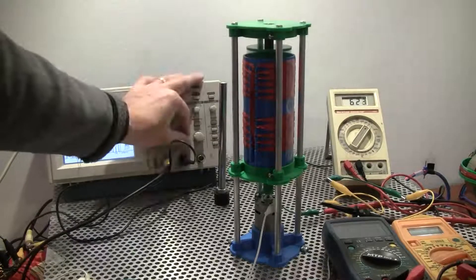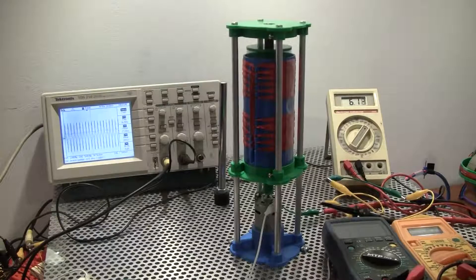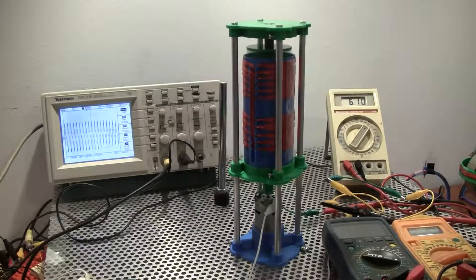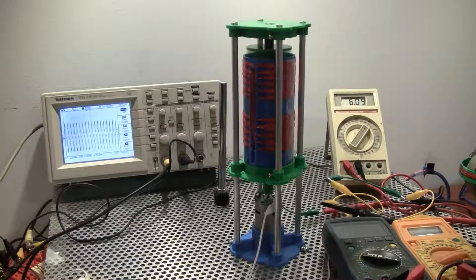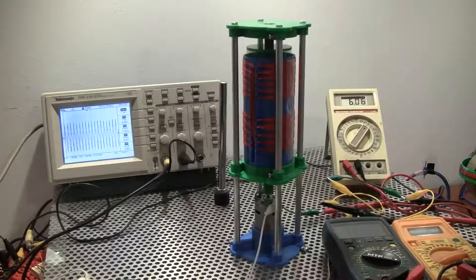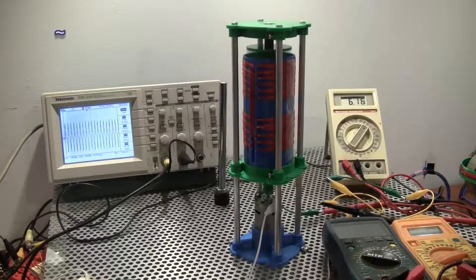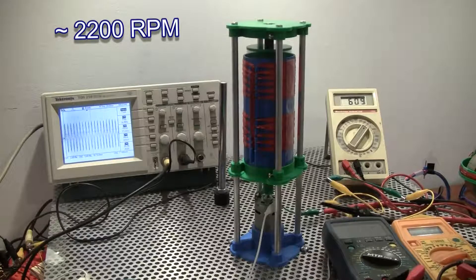It's at maximum velocity, 5 volts per division, so we're at about 25 volts AC output, 36.5 hertz. We multiply that by 60 to get the RPM.